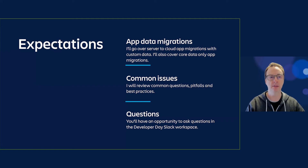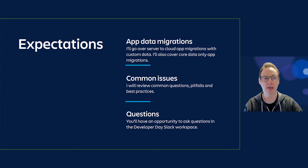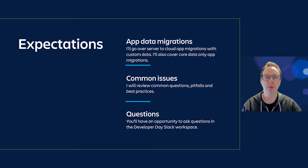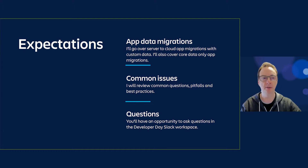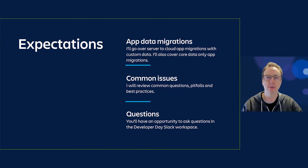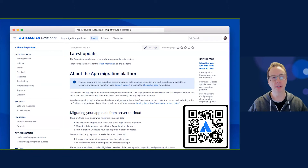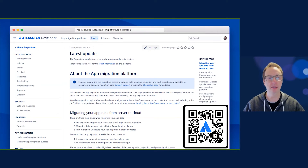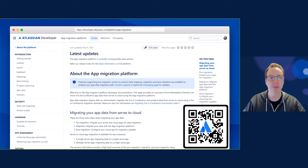I'll go over server to cloud App Migrations with custom data, and also cover core data only App Migrations for Jira and Confluence. I'll cover some common issues, pitfalls, and best practices to help you develop your code. At the end you'll have an opportunity to ask questions in the Developer Day Slack workspace. All of the documentation for App Cloud Migration is available on developer.atlassian.com/platform/app-migration, where we have example code, tutorials, and all the APIs.